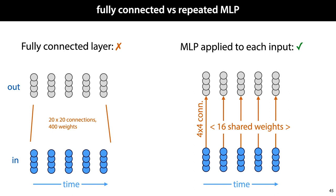But these 80 connections share only 16 unique weights, which are repeated at each step. Now this is a sequence-to-sequence layer. If the next instance has six vectors, we can simply repeat the same MLP again, and we won't need any extra weights. That's the basic idea of the sequence-to-sequence layer.